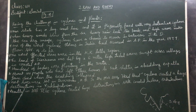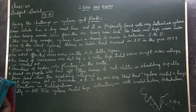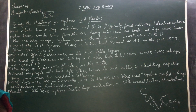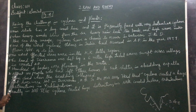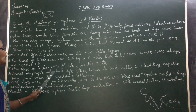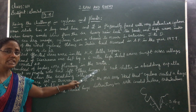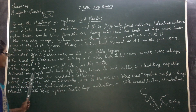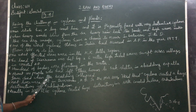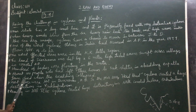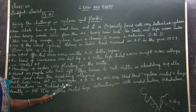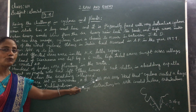Hundreds of bodies were floating on the water. About 100 people who had left their homes to seek shelter in a building in Bapatla town died when the building collapsed. Most lives were lost in Divisima, Krishna district.